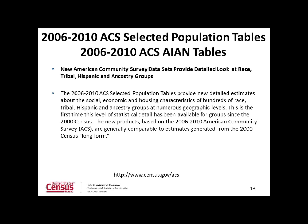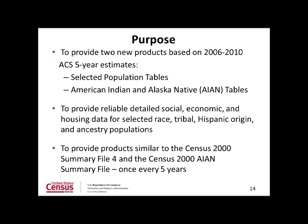Now let's talk about the most recent ACS product releases. At the end of May, the Census Bureau released new detailed estimates about the social, economic, and housing characteristics of hundreds of race, tribal, Hispanic, and ancestry groups at numerous geographic levels. This is the first time this level of statistical detail has been available for groups since the 2000 Census. The new products, based on the 2006–2010 ACS, are generally comparable to estimates generated from the Census 2000 long form. The purpose of these two new products is to employ ACS data aggregated over a five-year period to provide reliable estimates for selected race, tribal, Hispanic, and ancestry population groups at different levels of geography.